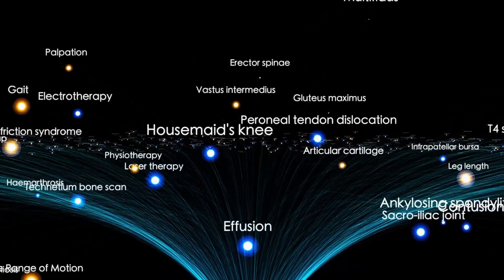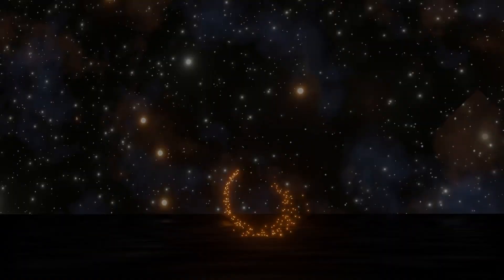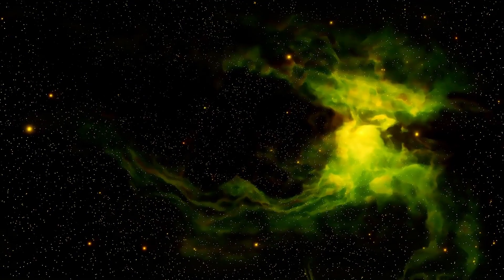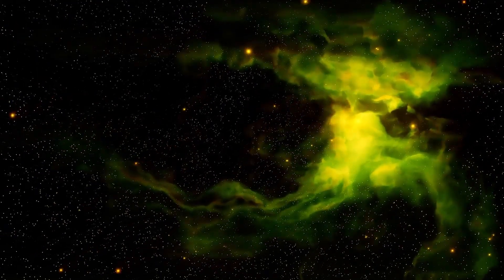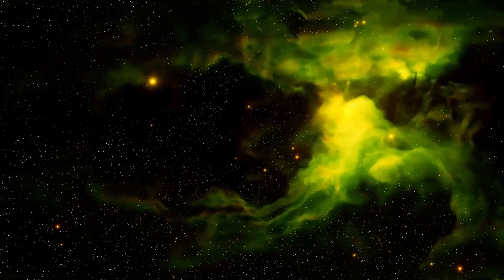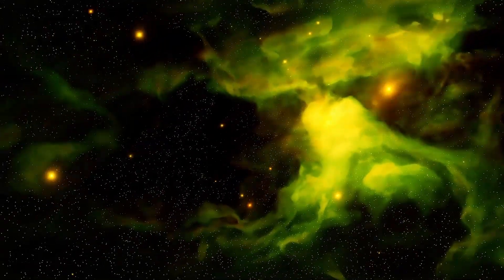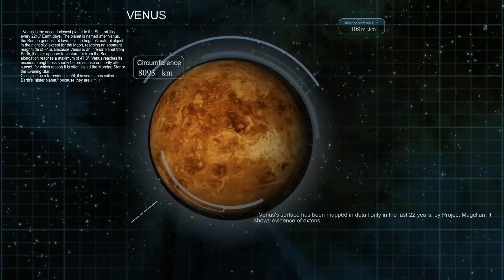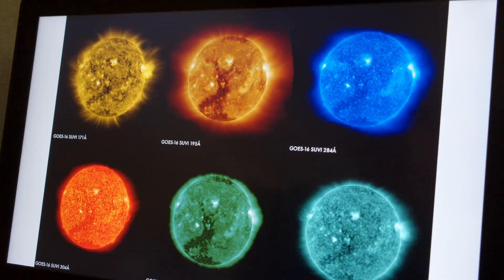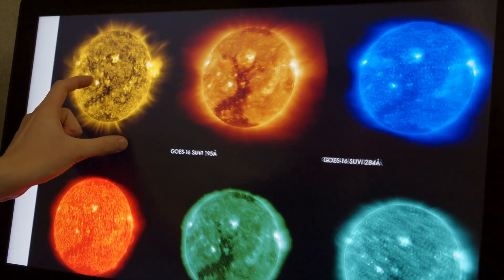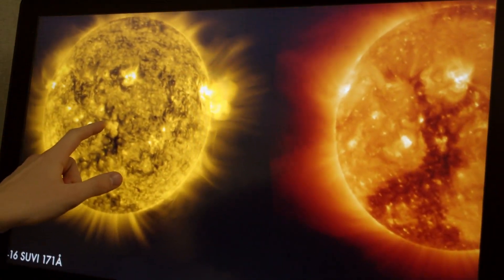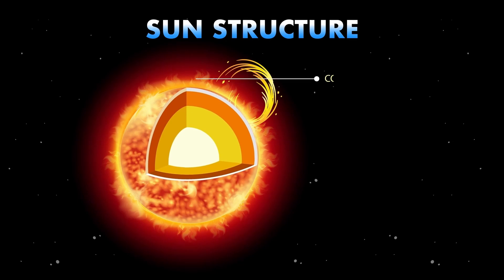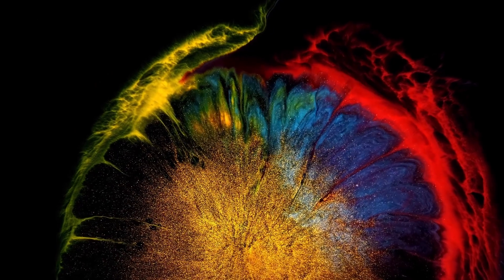Why? Because it was close. Unbelievably close. Just 4.2 light-years away, that's around 40 trillion kilometers. But in space terms, practically our galactic backyard. But distance wasn't the only thing that made it special. Proxima B was about 1.3 times the mass of Earth. Not too big, not too small. A rocky planet. And most importantly, it orbits in the habitable zone of its star. That narrow range where liquid water could, in theory, exist.